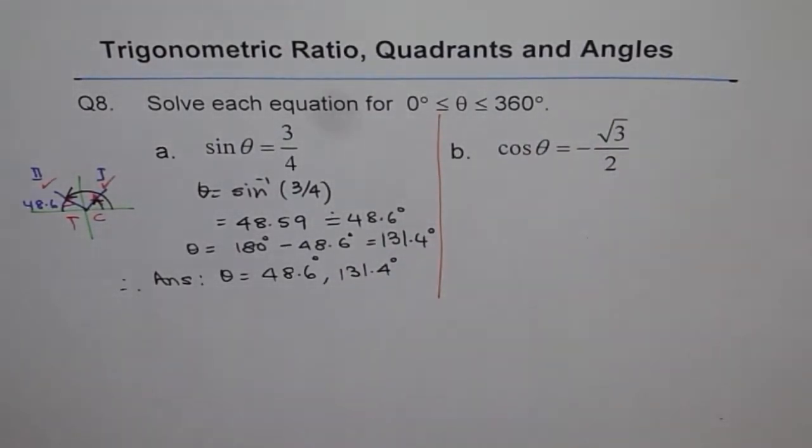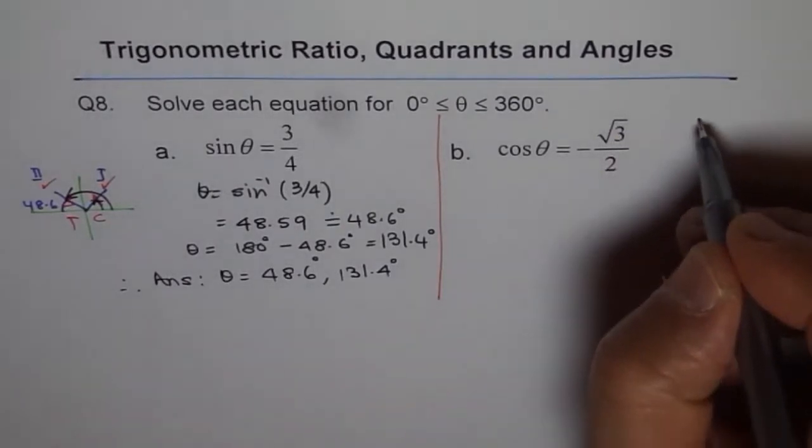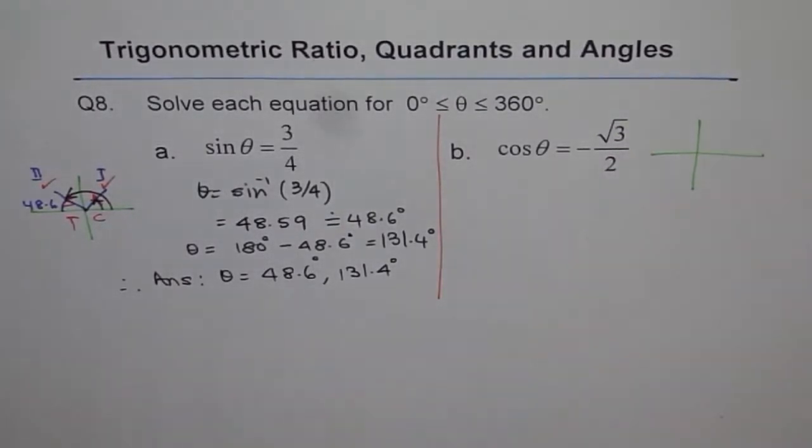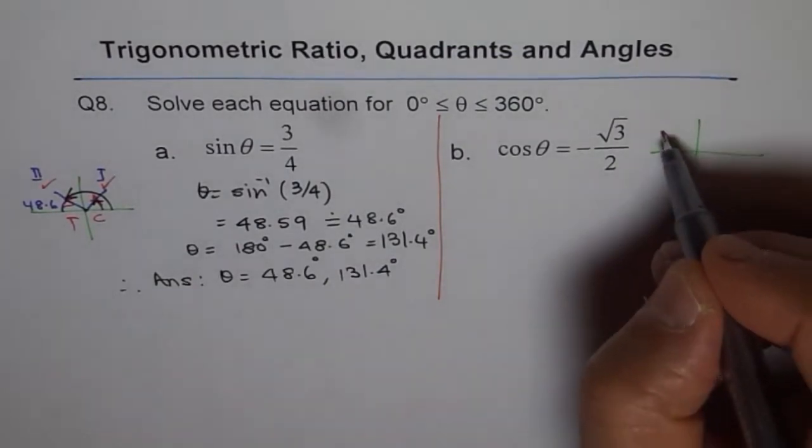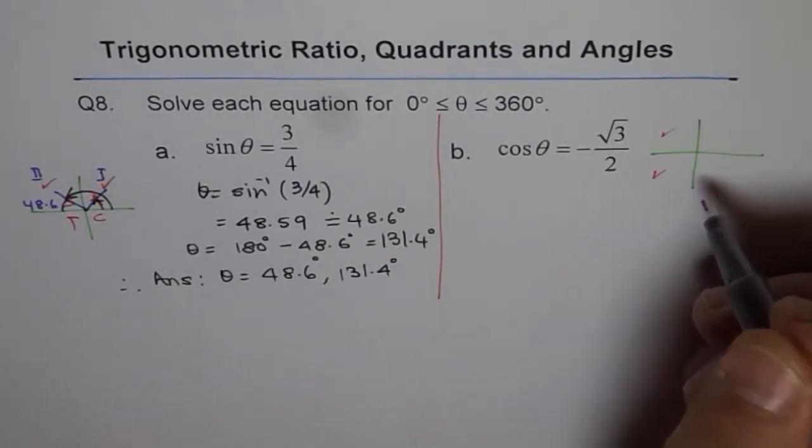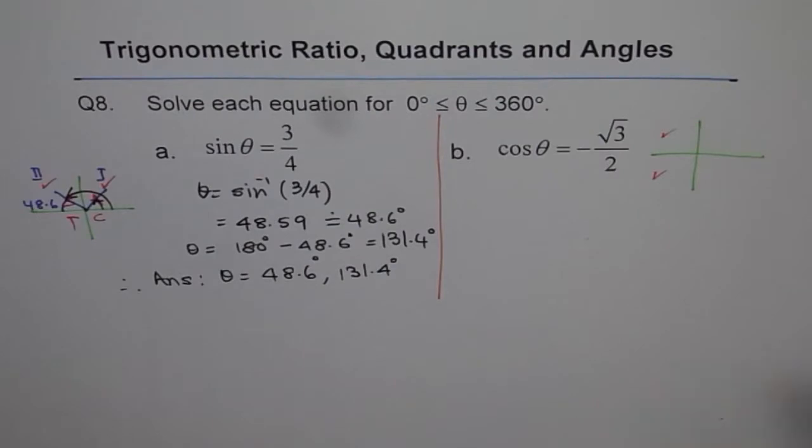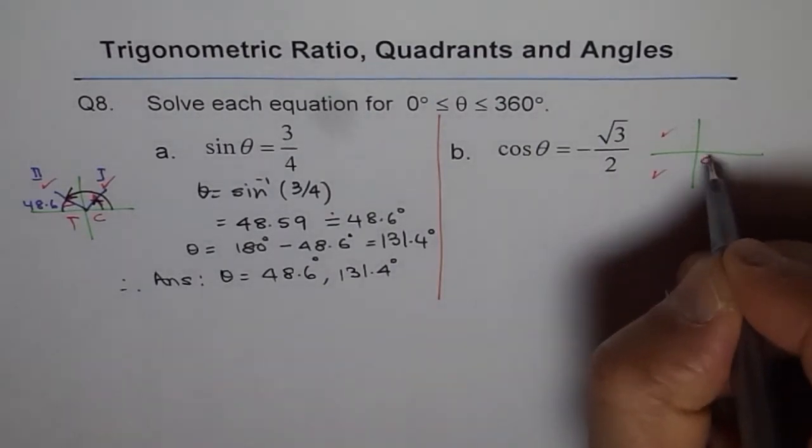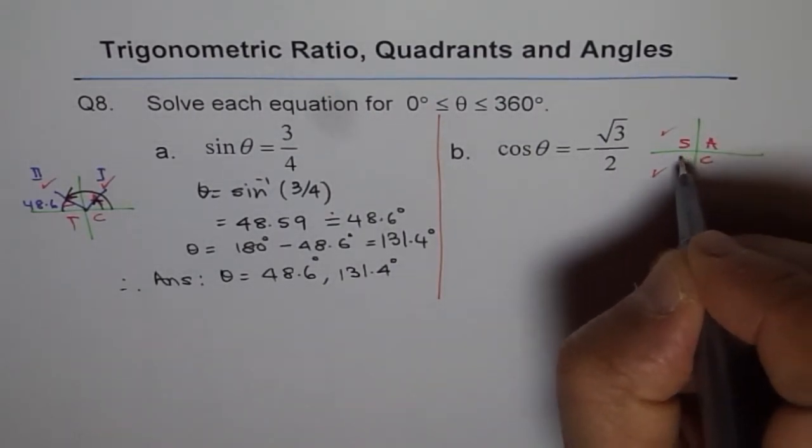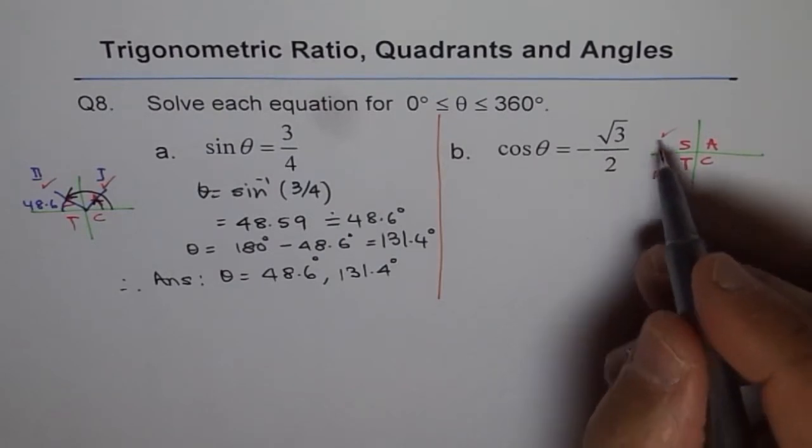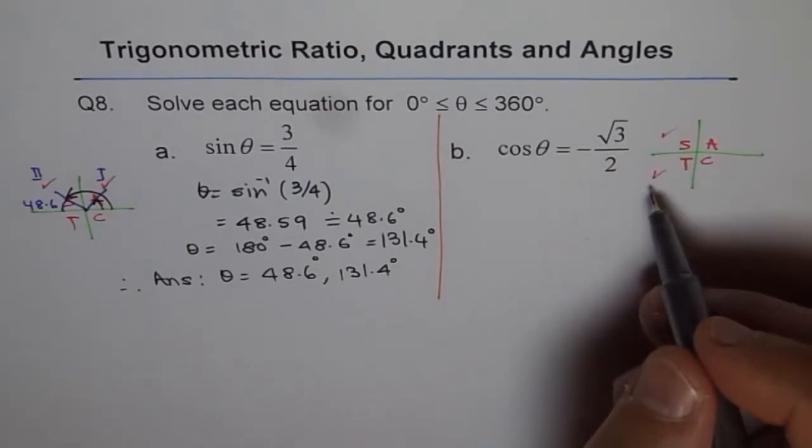Now let us try to do the other half. The second part which is cos θ = -√3/2. Now -√3/2 that means cos should be in quadrant 2 and 3. In these two quadrants, cos is negative. So we have the CAST rule. So it is negative in these two. So we are expecting two different answers.